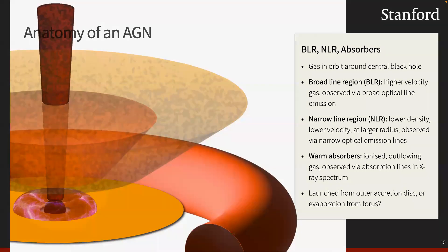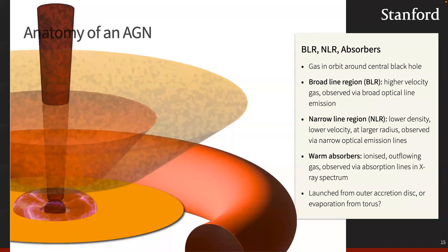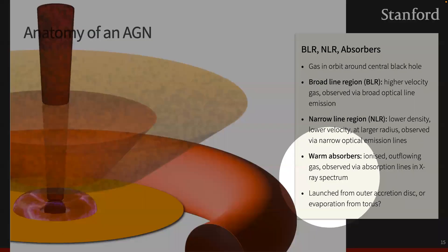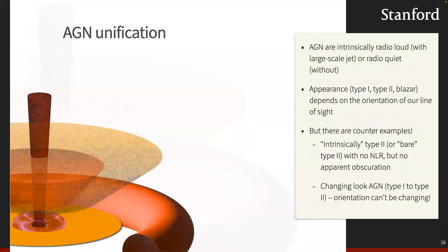Beyond the torus, there is a population of clumpy ionized gas around the central black hole, observed mainly through optical spectra. Gas close to the black hole is highly ionized and moving fast, producing broad Doppler-broadened emission lines — the broad-line region (BLR). Gas further away is cooler and moving more slowly, producing narrow emission lines — the narrow-line region (NLR). In X-rays, we also see some of this gas as 'warm absorbers' — slightly ionized gas that absorbs the X-ray emission along our line of sight.